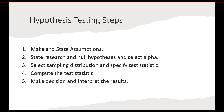Whenever we hypothesis test or test our hypotheses, we are going to go through five steps. The first is we are going to make and state any assumptions about that test. Then we will state our research and null hypotheses and our selected alpha or significance level. Next we will select the sampling distribution and specify the test statistic, then compute that test statistic, and finally make a decision and interpret the results.